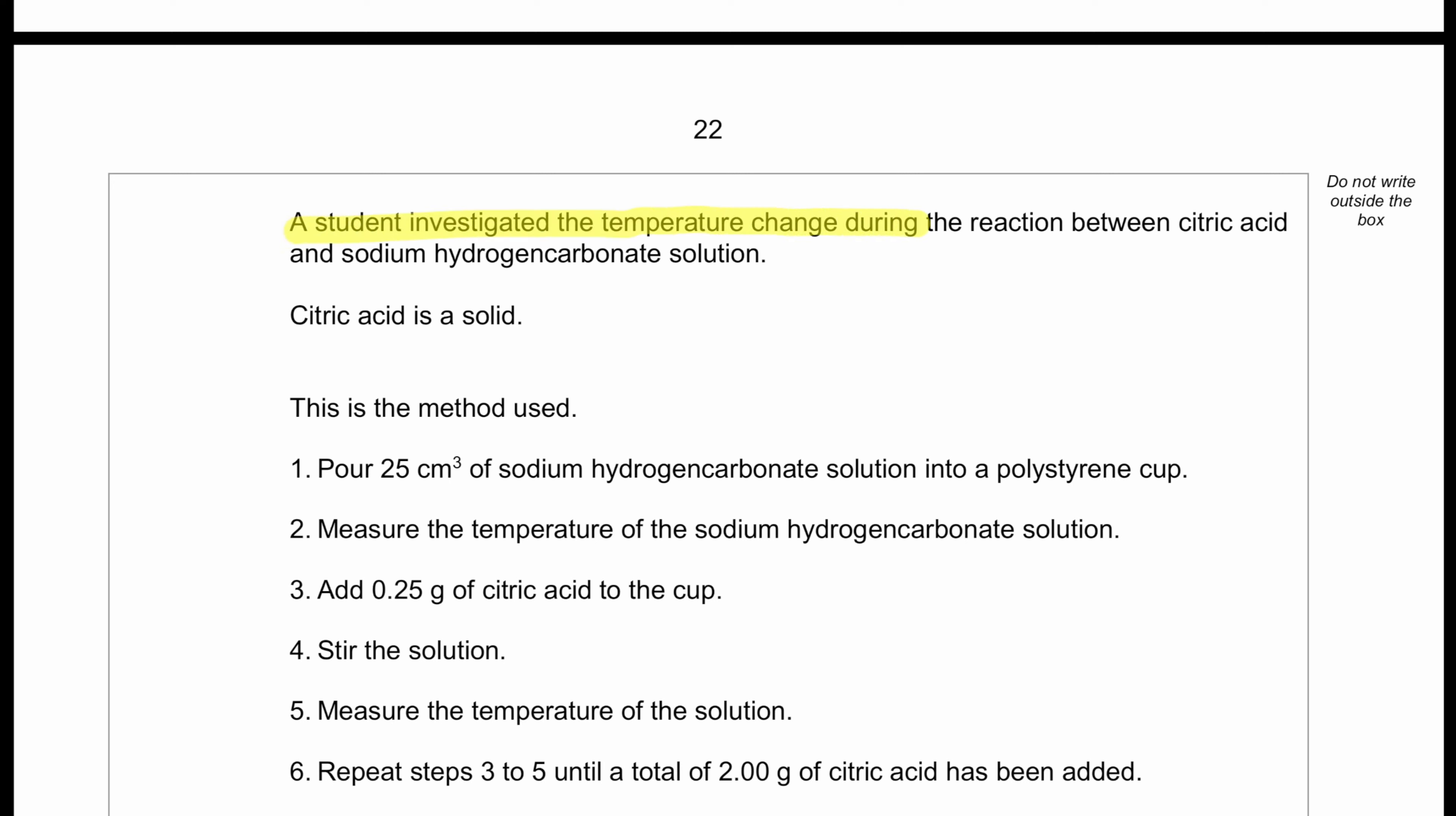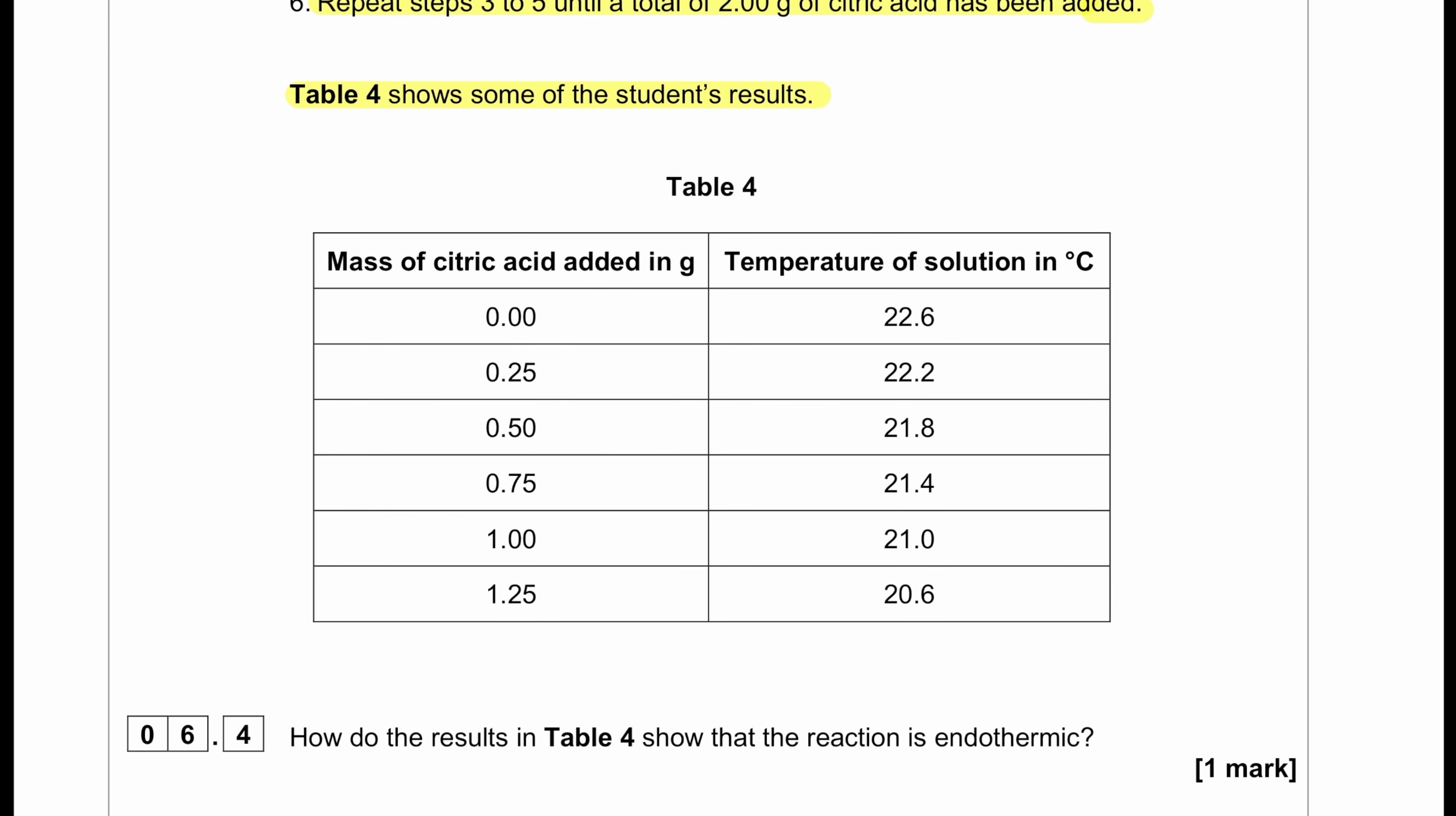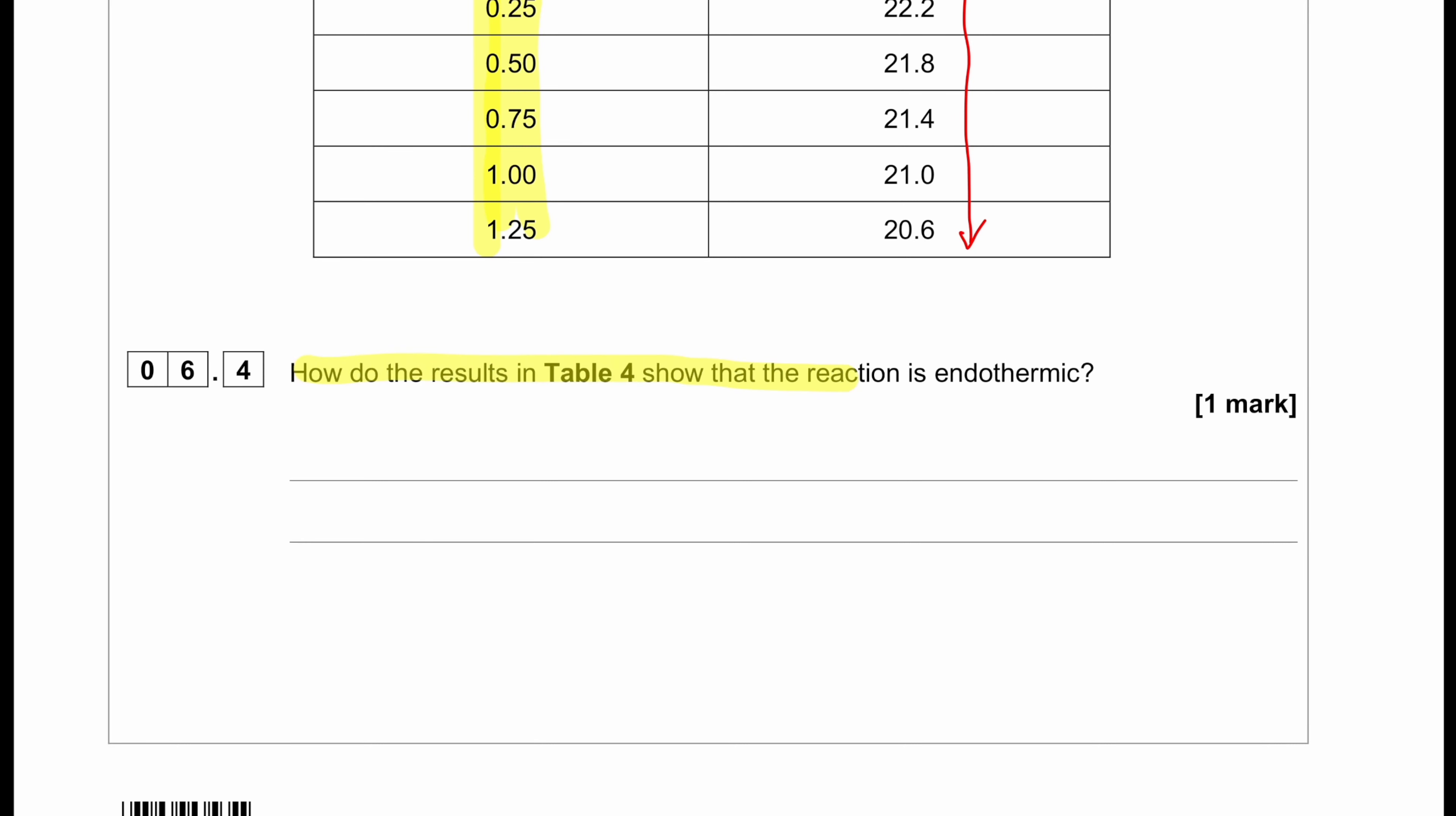A student investigated the temperature change during the reaction between citric acid and sodium hydrogen carbonate solution. Citric acid is a solid. This is the method used: Pour 25 cm³ of sodium hydrogen carbonate solution into a polystyrene cup. Measure the temperature of the sodium hydrogen carbonate solution. Add 0.25 grams of citric acid to the cup. Stir the solution. Measure the temperature of the solution. Repeat steps 3 to 5 until a total of 2 grams of citric acid has been added. Table 4 shows some of the student's results. We can see that the mass of citric acid is increased in increments of 0.25 gram, and we can also see the temperature is decreasing. How do the results in table 4 show the reaction is endothermic? The answer will be temperature is decreasing during the reaction.